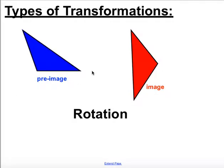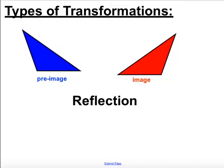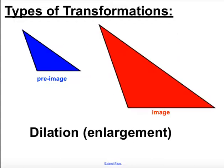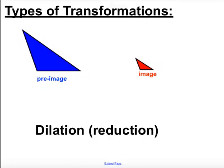Next, we can rotate. This is like spinning something — a rotation. It doesn't actually change the figure, but we can move it by spinning it. Reflection also doesn't change the figure — it's almost like a mirror image. We can have dilations, where we can get larger, like an enlargement, or smaller, like a reduction.